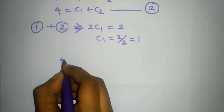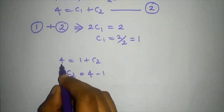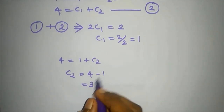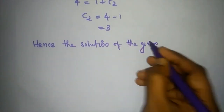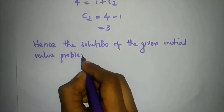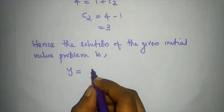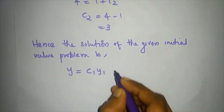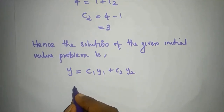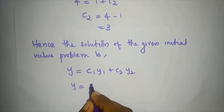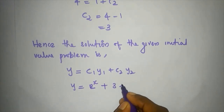So 2*c1 = 2, which gives c1 = 1. Substituting c1 = 1 into c1 + c2 = 4, we get c2 = 4 minus 1 equal to 3. So c1 = 1 and c2 = 3. The final solution is y = c1*e^x + c2*e^(-x), that is y = e^x plus 3*e^(-x). That's it.